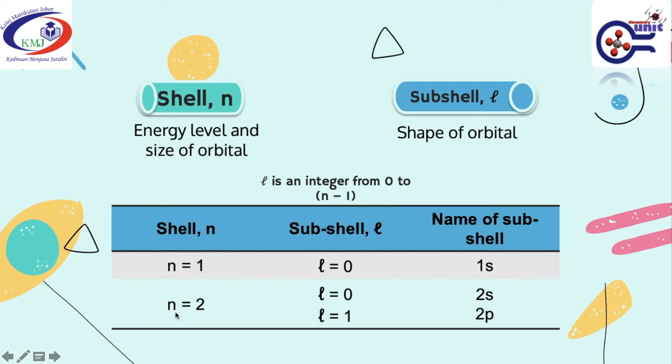When n is equal to 2, you have L equal to 0 and L equal to 1. So you have two values of L. The name of the subshell is 2S because your n is equal to 2 and L is equal to 0. And when you have n equal to 2, L equal to 1, it's 2P.